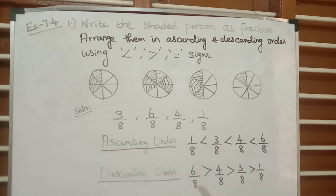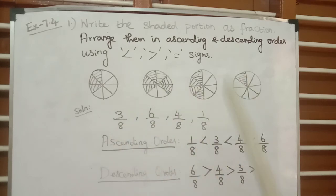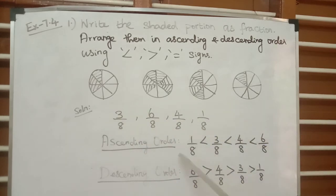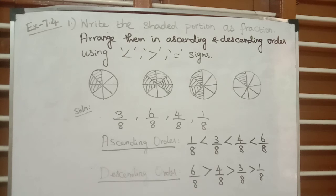To summarize: when all fractions have the same denominator, it is very easy to compare the numerator numbers and arrange them in ascending or descending order. Ascending means from smaller to bigger, and descending means from bigger to smaller. This is a straightforward question — just find the fractions from the figures and arrange them accordingly. Hope you have understood. Thank you.